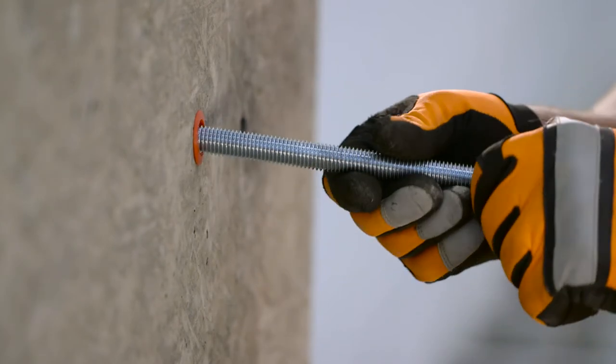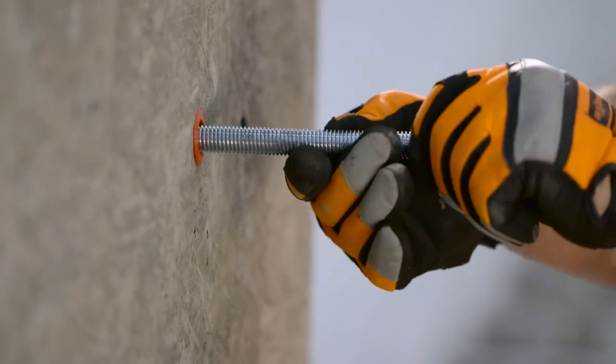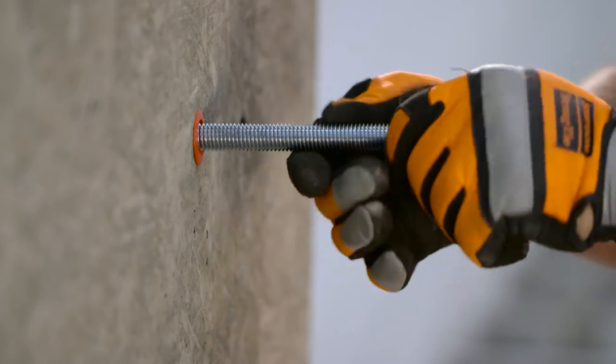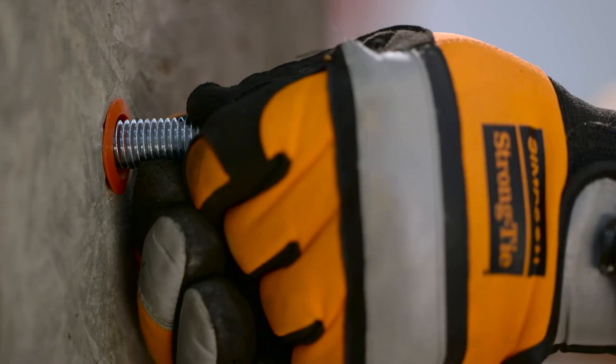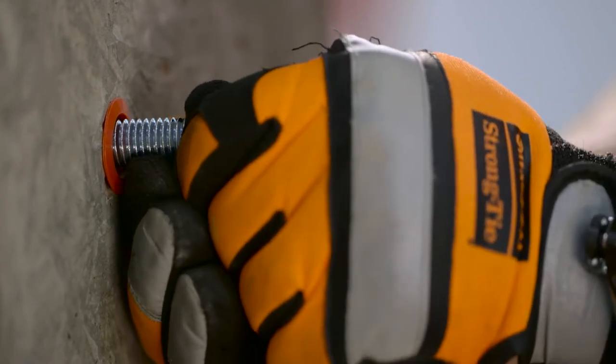Place either the threaded rod or rebar through the adhesive retaining cap and into the adhesive filled hole. Turn the rod or rebar slowly until the insert bottoms out. Do not disturb until fully cured.